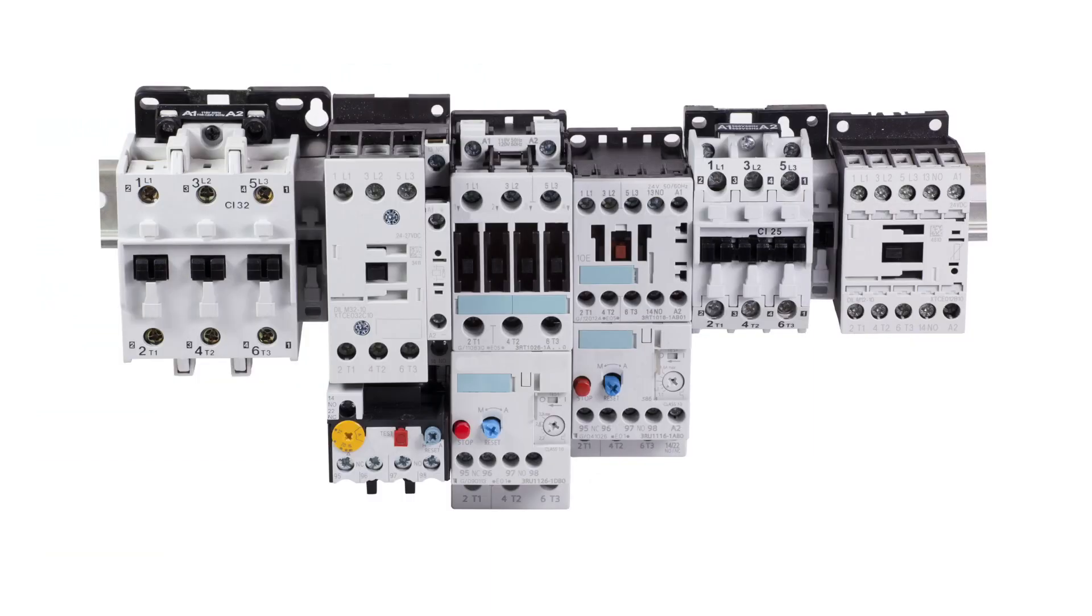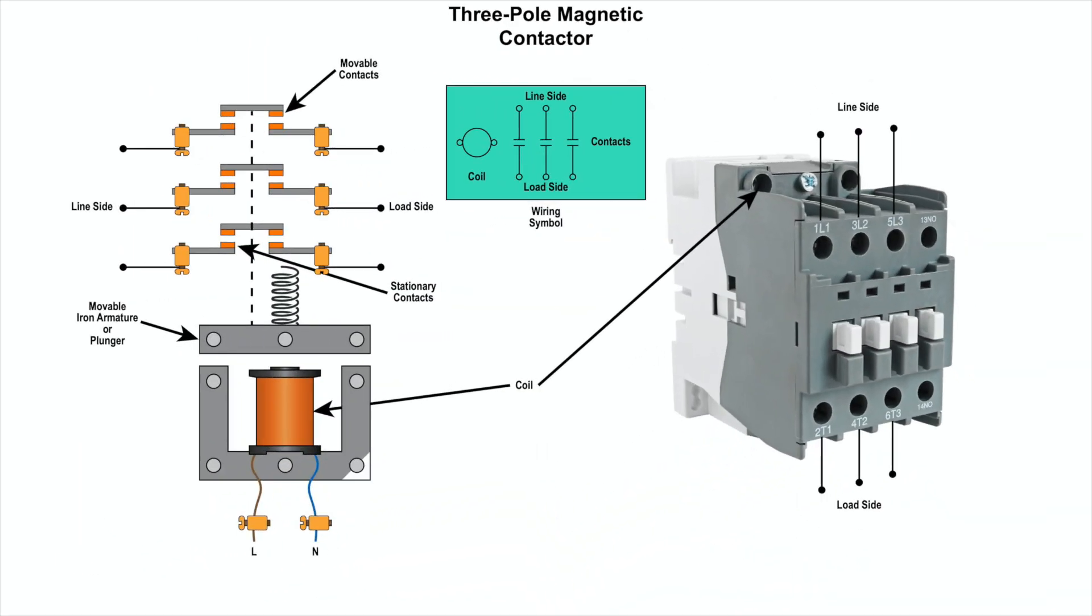A magnetic contactor is a magnetically actuated device for repeatedly establishing or interrupting an electric power circuit. The contactor is similar in operation to the relay. The difference between the two is that the contactor is used in applications with higher current carrying capacity, whereas the relay is used for lower current applications.